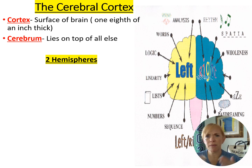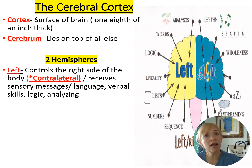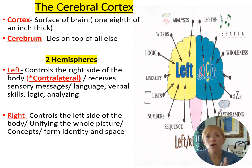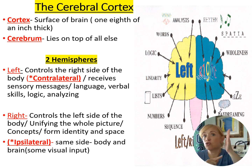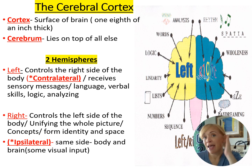Patients with right hemisphere strokes can still produce words, but speech sounds monotone and flat. Contralateral transmission means the left hemisphere controls the right side of the body and vice versa. Ipsilateral means the same-side hemisphere controls that side of the body. Most functions are contralateral, but a few are ipsilateral.